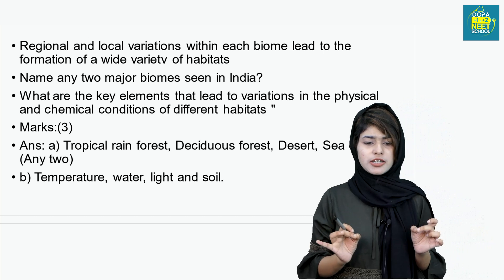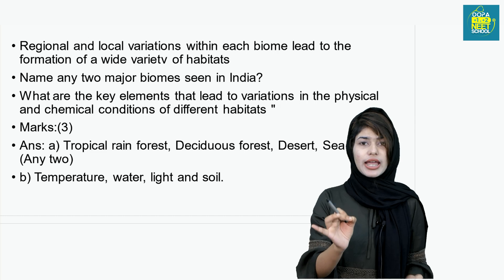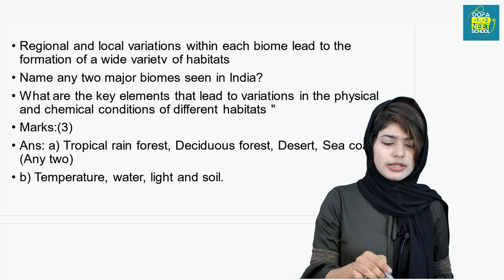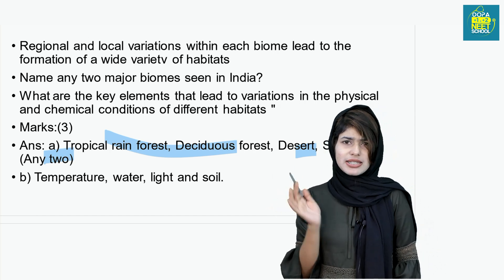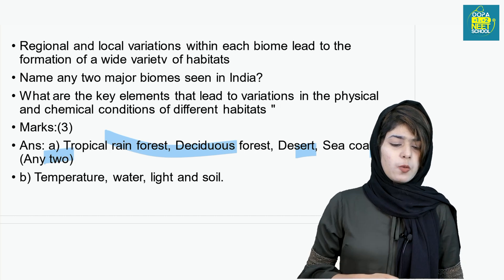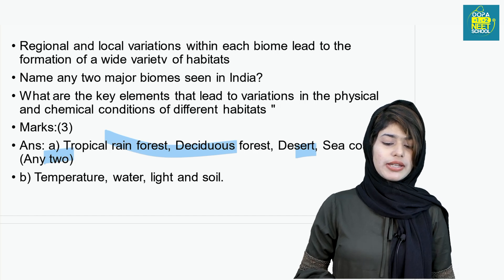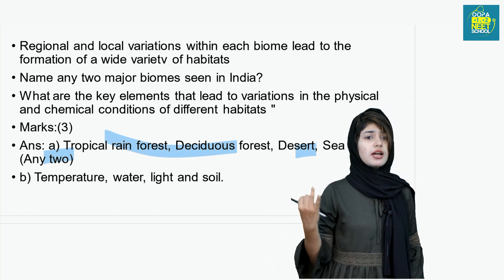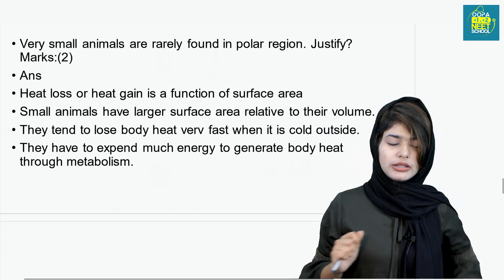Regional and local variations within each biome lead to the formation of a wide variety of habitats. Name any two major biomes seen in India: tropical rainforest, deciduous forest, desert, sea coast, wetlands, estuaries. The key elements that lead to variations in physical and chemical conditions of different habitats are abiotic factors: temperature, water, light, soil, etc.